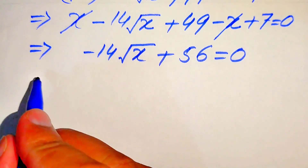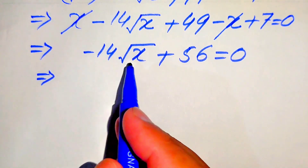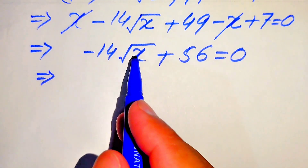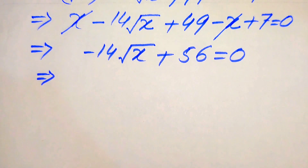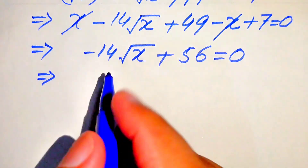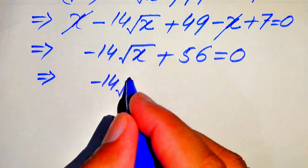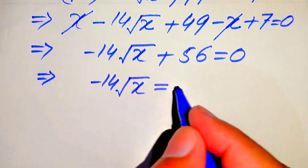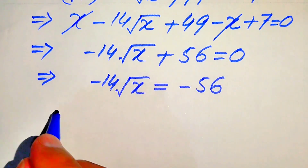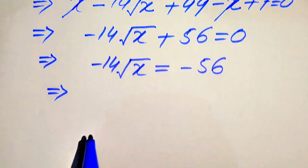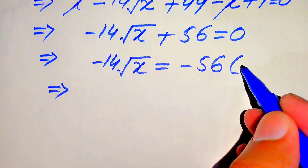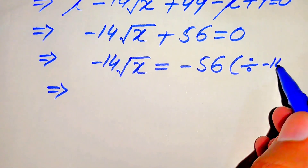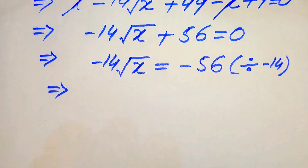Now in the next step, we see that we again have square root of x here, so we need to eliminate this square root sign. For this we move all the other terms to the right hand side. First we move plus 56 to the right hand side, and it will be written as minus 14 times square root of x equals minus 56. In order to eliminate this minus 14, we need to divide both sides by minus 14.